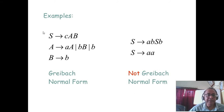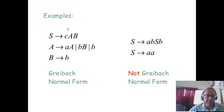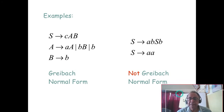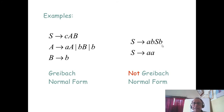This is a Greibach Normal Form — it starts with a terminal followed by two variables, starts with a terminal followed by one variable — it is always a Greibach Normal Form. But it is not Chomsky's Normal Form because it violates CNF. Now this is not Greibach Normal Form because the terminal cannot be at the end — all terminals should be at the beginning. So this rule violates GNF. This is a typical quiz question type.